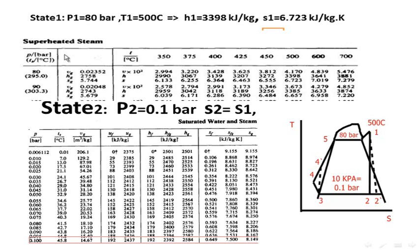As you see here, the superheated steam side, at a pressure 80 bar and temperature 500 Celsius, the enthalpy is 3,398 kilojoule per kilogram and the entropy is 6.723 kilojoule per kilogram. Both enthalpy and entropy will be used in our calculation.